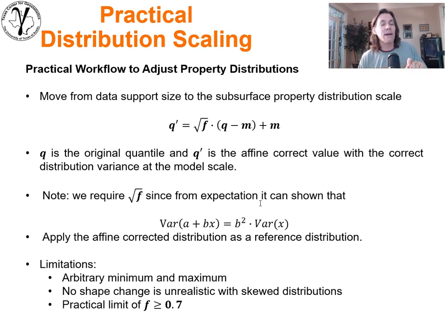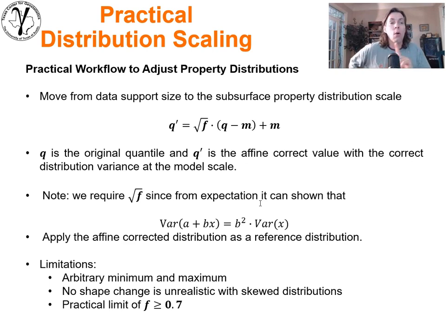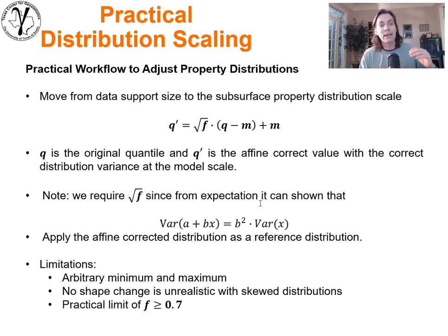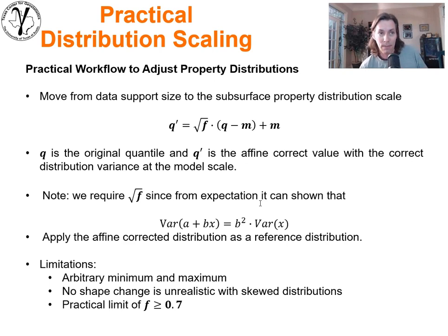We calculate the scale-based variance reduction factor F, then apply it to each data value as a quantile transform to get a new distribution. People will ask: are you applying this to the actual data values? No — we're applying it to the values within the distribution, not changing the data values at the data locations. We're changing the reference distribution that we try to honor in simulation. If you want to change values at data locations, you would need to do effective property upscaling around the well based on some model of heterogeneity. Here we're correcting the statistic — the distribution — not the conditioning data for the model.